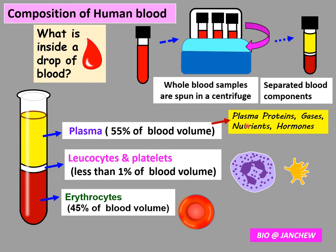Plasma contains plasma proteins, gases, nutrients, hormones, and other things. Below the plasma there is a thin white layer containing the leukocytes, which are the white blood cells, and the platelets — making up less than 1% of the blood volume. The last layer is thicker and red in color, containing the erythrocytes or red blood cells, which make up 45% of the blood volume.